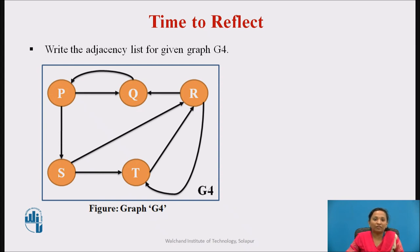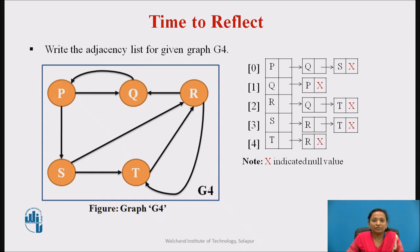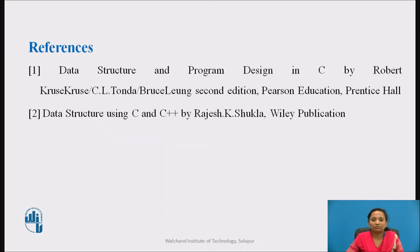Here is the time to reflect on the content we have learnt. Pause the video and write the adjacency list for given graph G4. Here is the adjacency list for graph G4. There is an edge from vertex p to q and p to s, therefore node p is linked to nodes q and s. There is an edge from vertex q to p, therefore node q is linked to node p. There is an edge from vertex r to q and r to t, so node r is linked to nodes q and t. There is an edge from node s to r and node t, so node s is linked to nodes r and t. Finally, there is an edge from node t to node r, so node t is linked to node r.